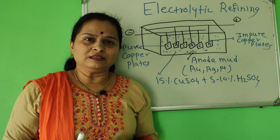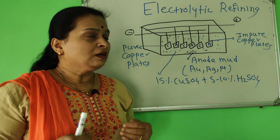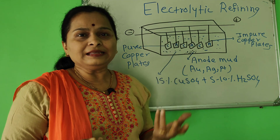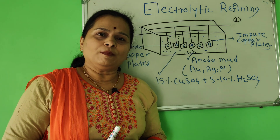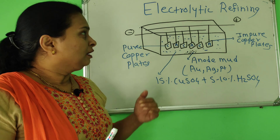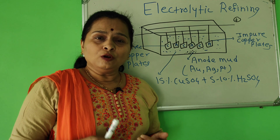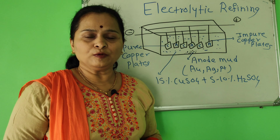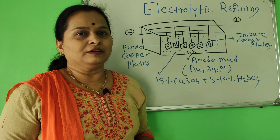In bessemerization, blister copper is obtained, and this blister copper contains 96 to 98% of copper and the remaining are impurities. Electrolytic refining is used to obtain 99.99% pure copper, which is used as an electrical conductor.